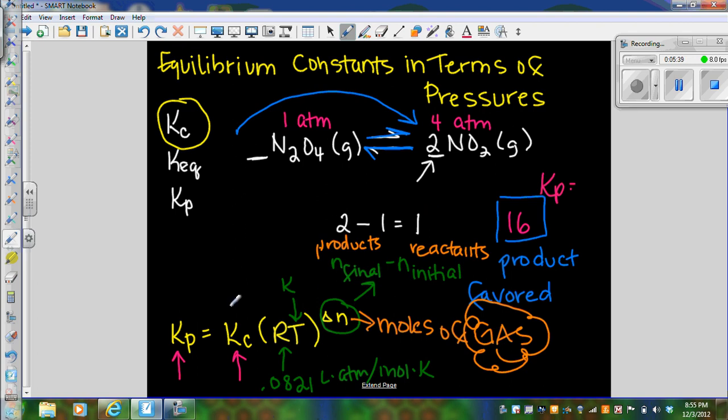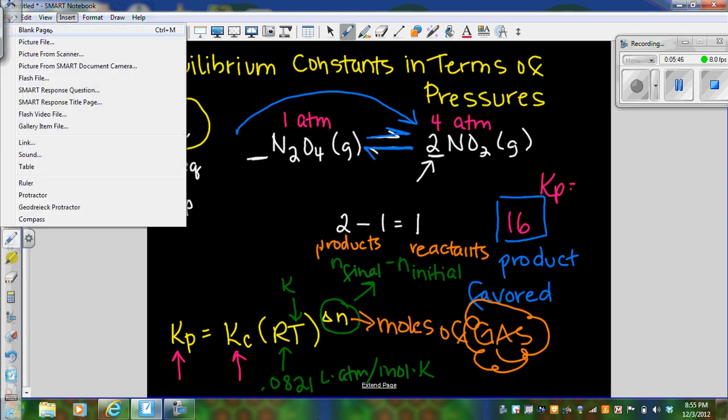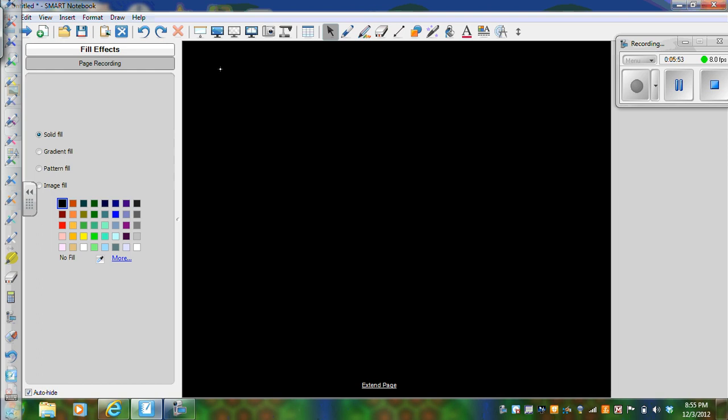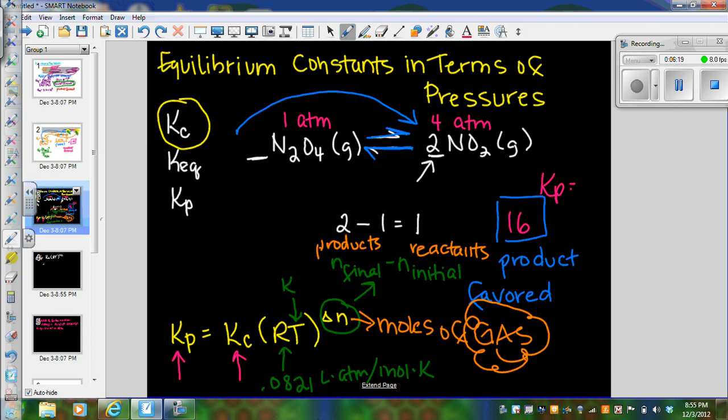So what I'm going to do now is I'm going to substitute into this equation. So we're going to do Kp equals Kc times RT to the delta n. So if I go back to where we were before, I solved this in terms of pressures. I didn't have a temperature associated with this.